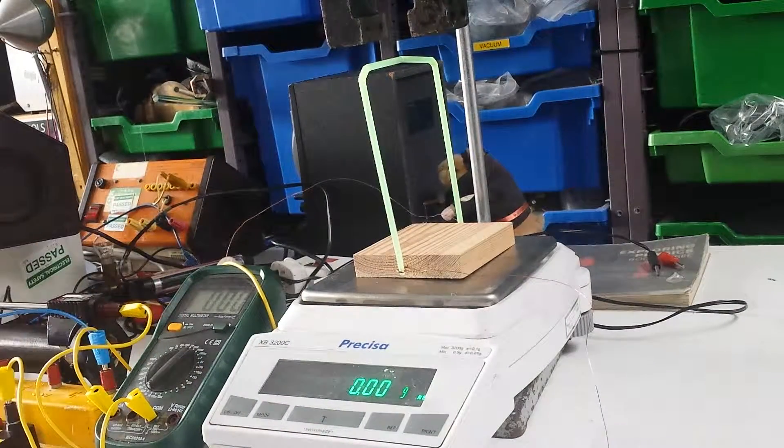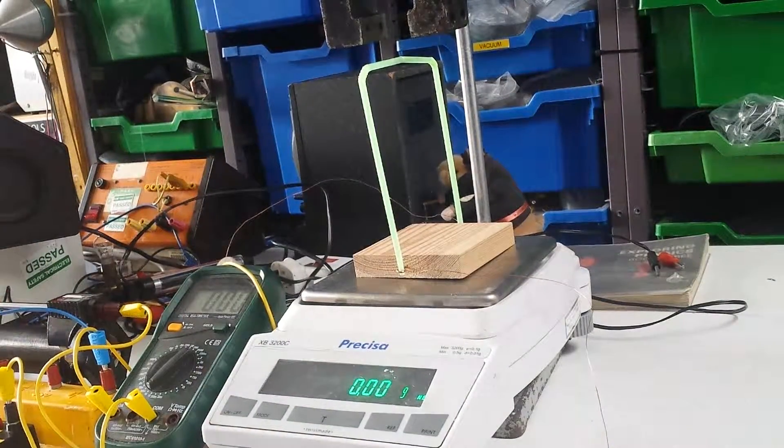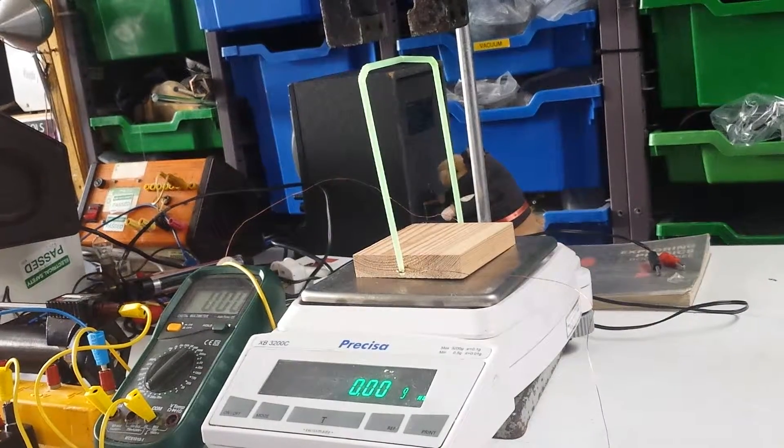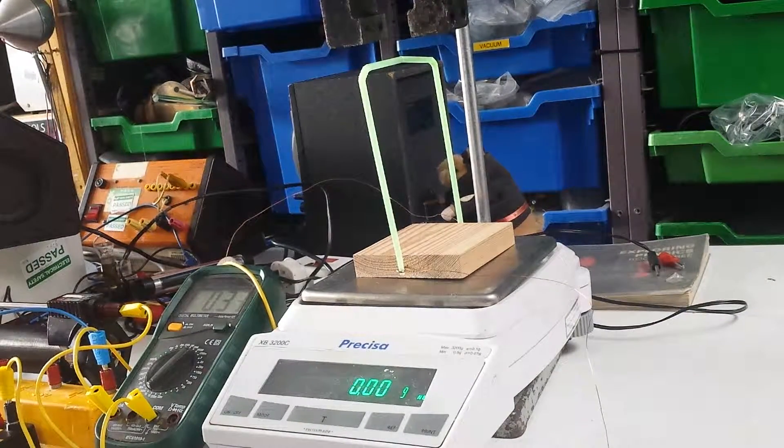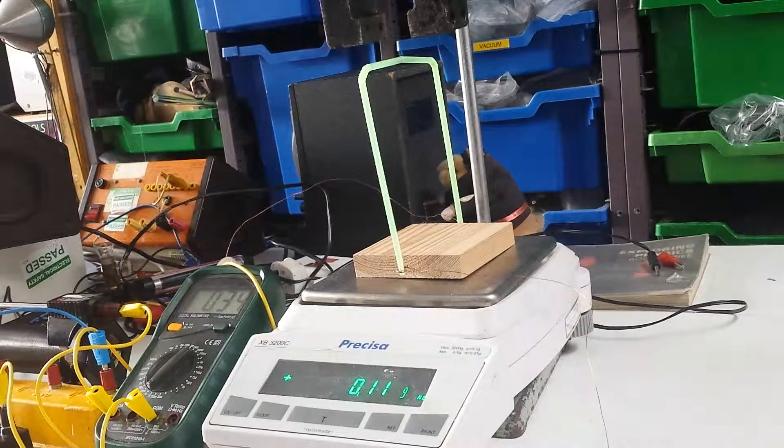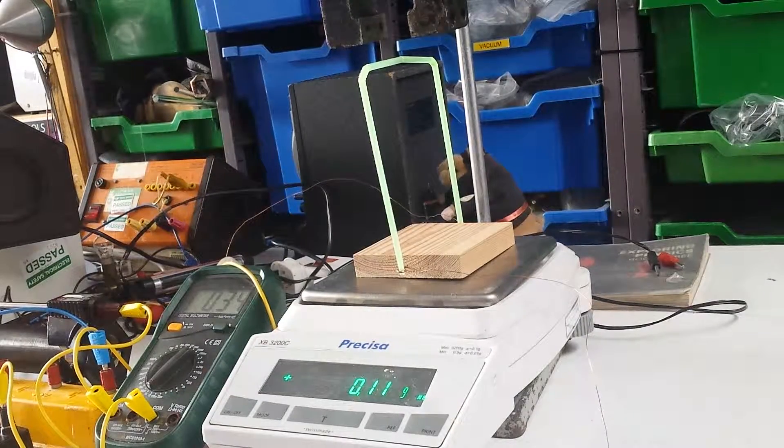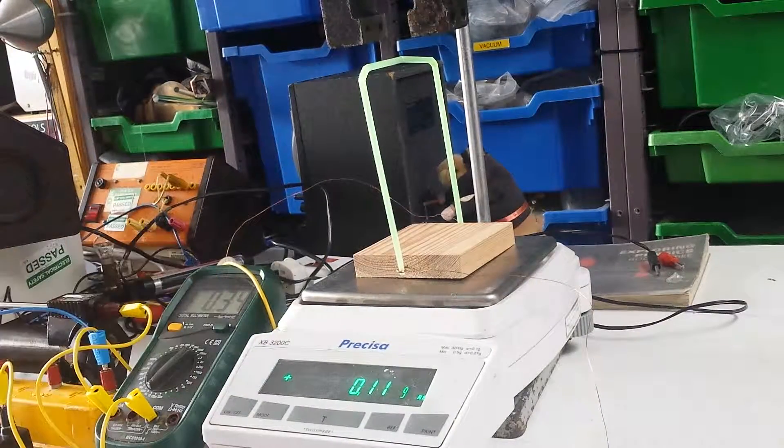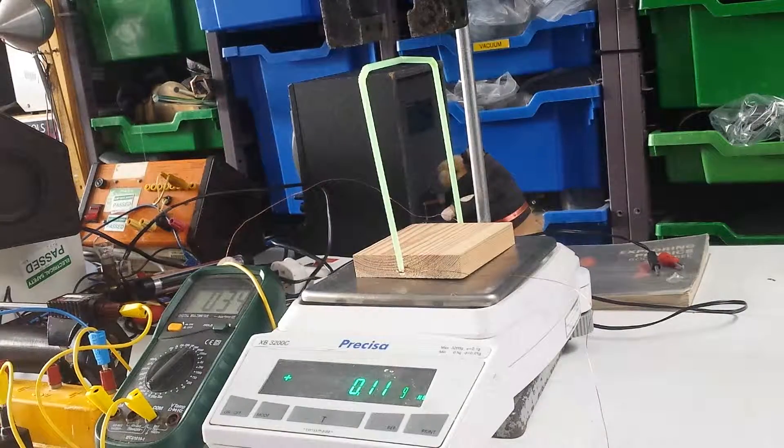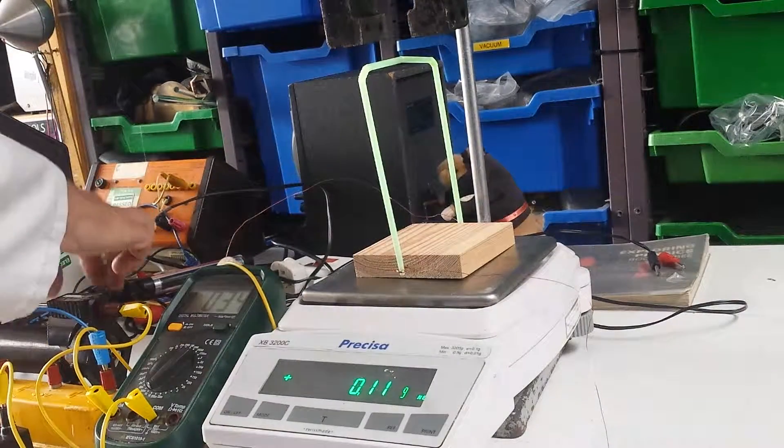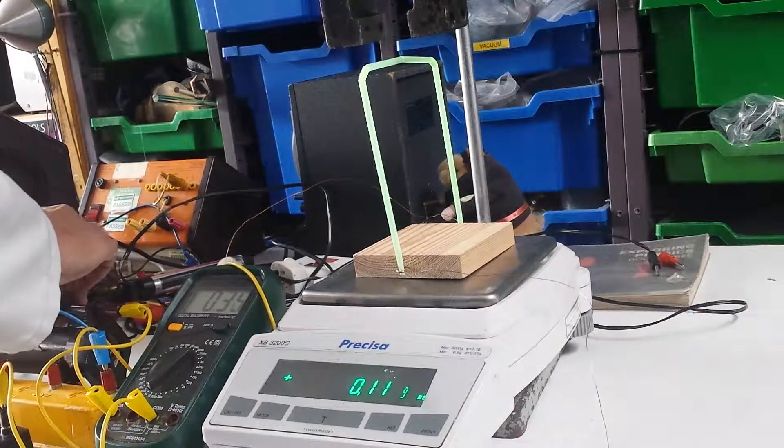An ammeter, rheostat, battery, and a switch. So when you switch on, you'll see a positive force is exerted as we've gone up plus 0.11 of a gram. So I'll move the rheostat to increase the current through the wire.